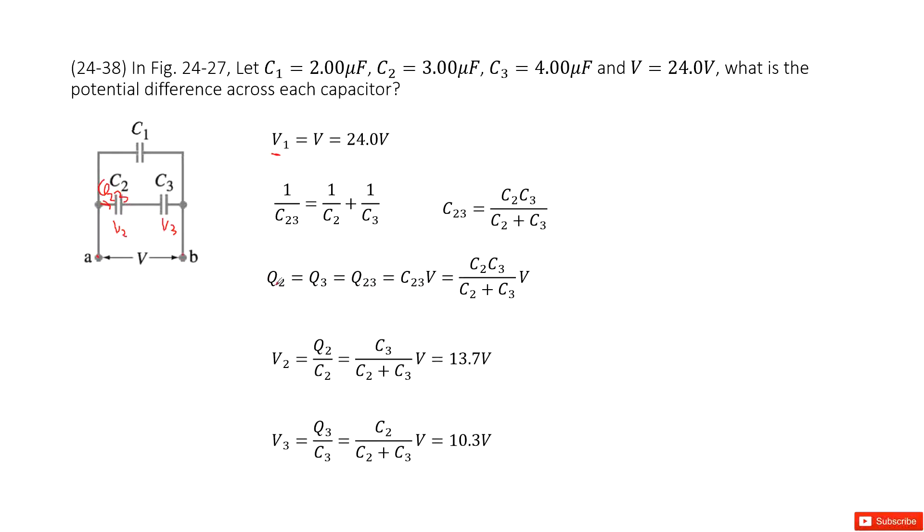Now you can see the total capacitance for C2 and C3 in series. C2 and C3 can be replaced by their equivalent C23, following these equations. Then we get the formula for C23 that looks like this.